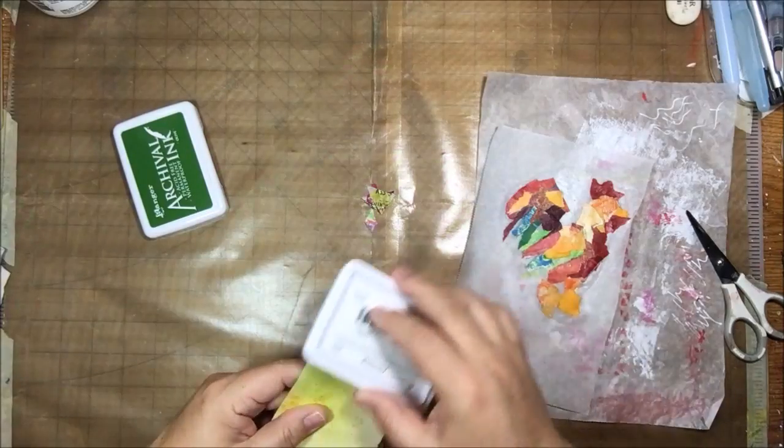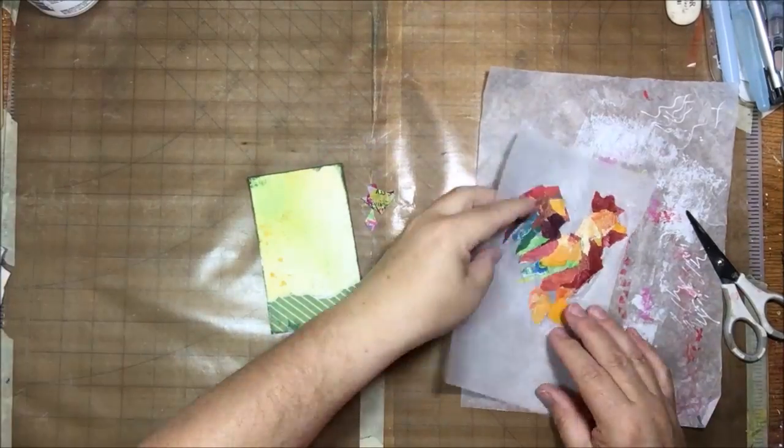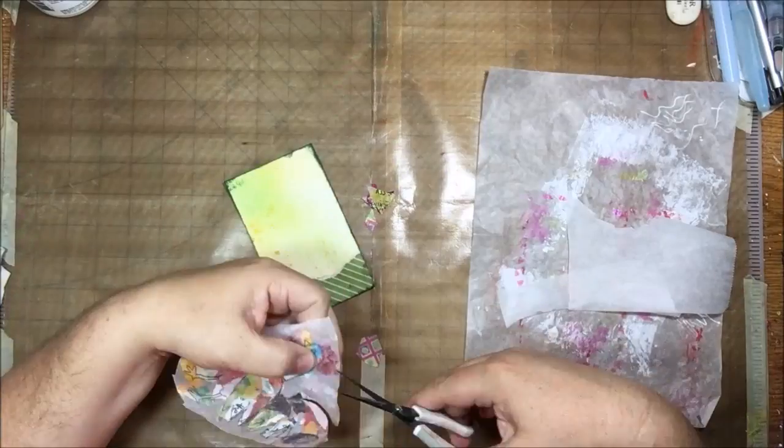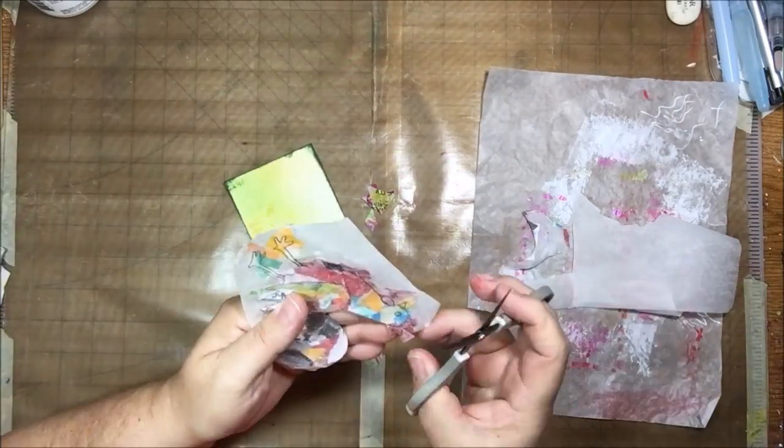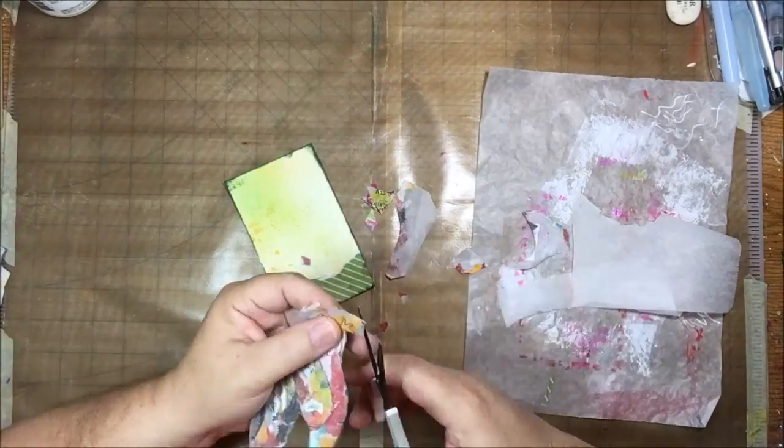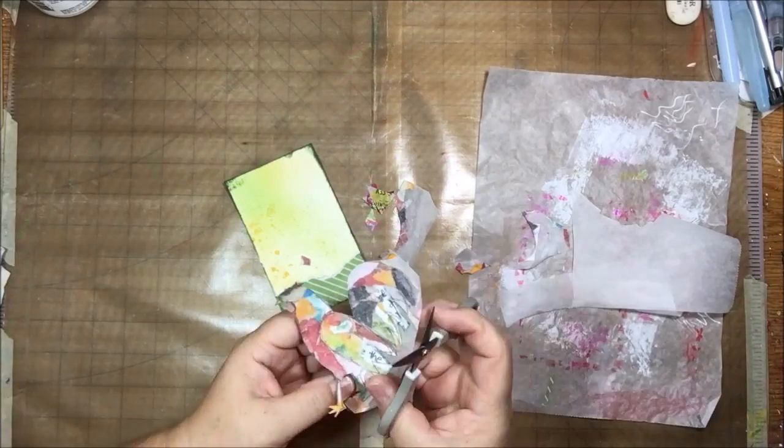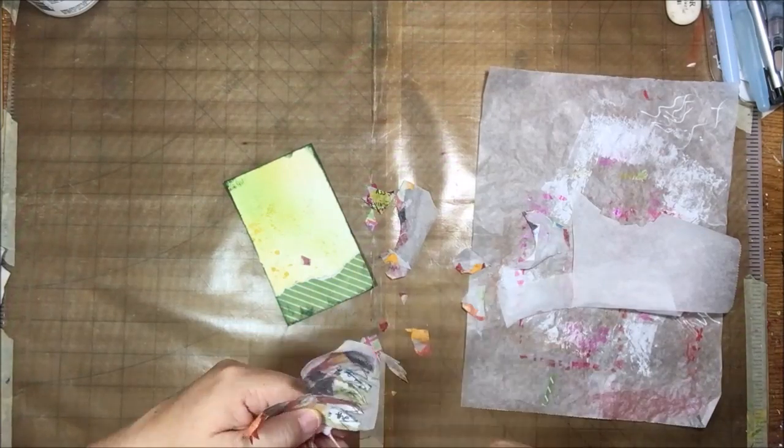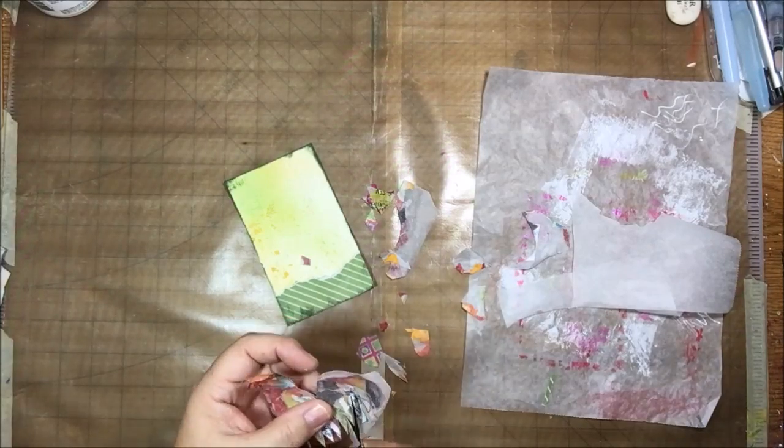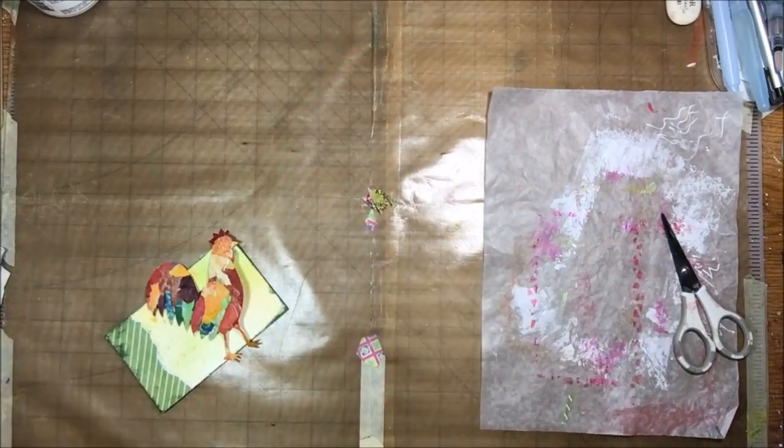But I guess the next thing I did was edge my paper with an olive colored archival pad, then I fussy cut it. I'm looking at the back and cutting it out. It's actually very interesting from the back to see what the papers have on the other sides of them. He looks totally different on that side. You do need small sharp scissors for this process. If you try to do it with big scissors it just frustrates you.